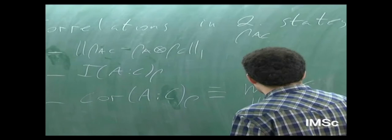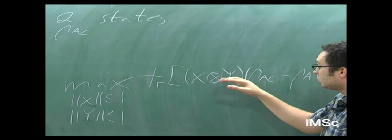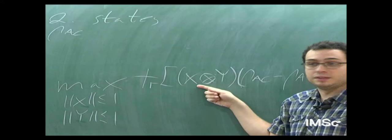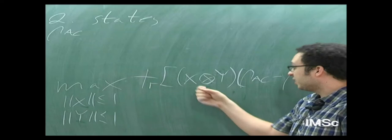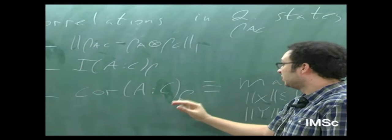The covariance of A and C on the state rho is defined by maximizing over operators X and Y, each with operator norm smaller than one, where X acts on space A and Y on space C. We look at trace(XY rho_AC minus rho_A tensor rho_C). The difference between trace norm and covariance is that in trace norm we can use any measurement, including global ones, whereas in the covariance we can only use local operators. This makes the covariance much more complicated to work with.